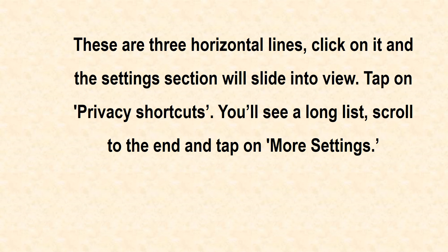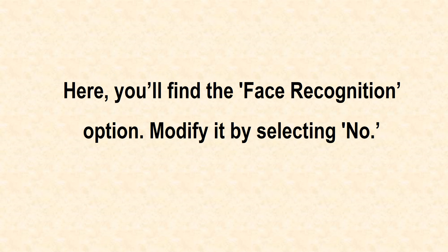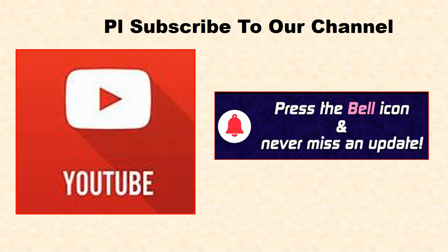Through a phone: if you browse Facebook using a phone, this setting can be altered through the app itself. Open the app and on the extreme right, you'll notice the overflow button. These are three horizontal lines — click on it and the settings section will slide into view. Tap on Privacy Shortcuts.